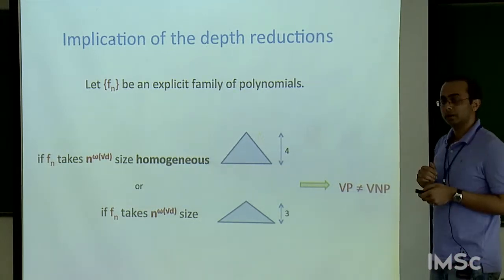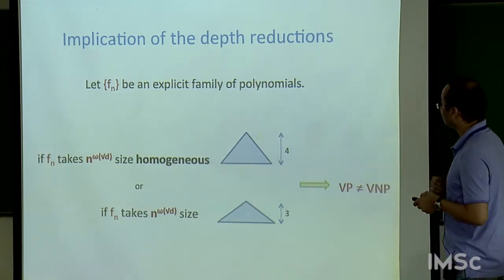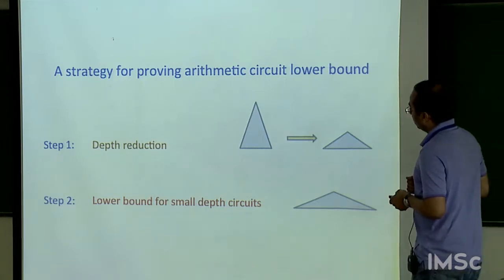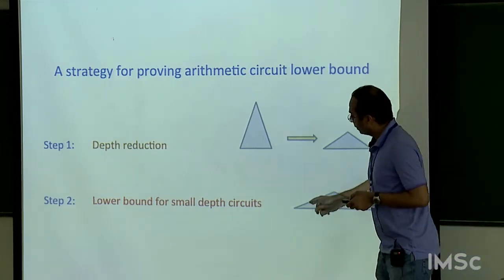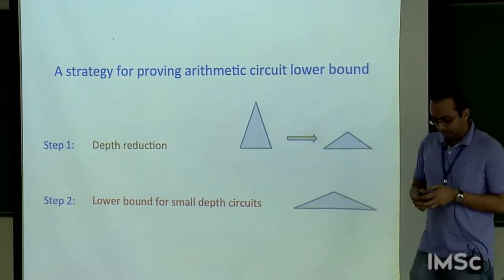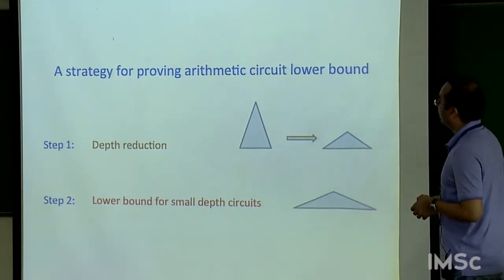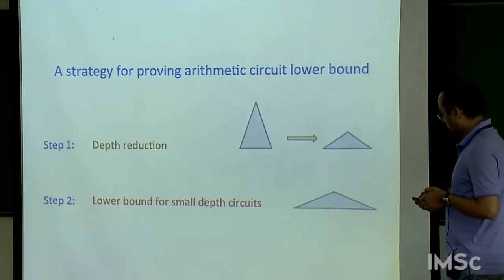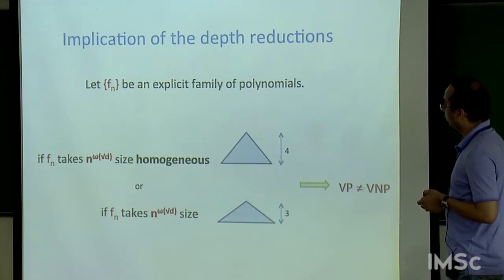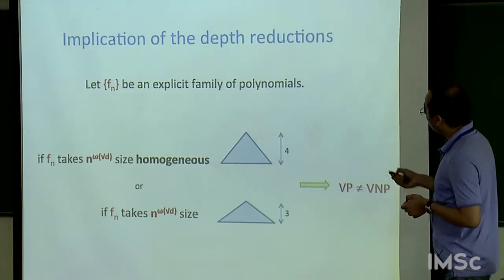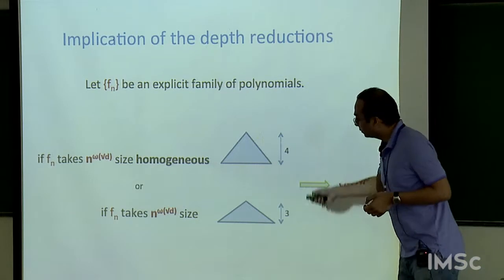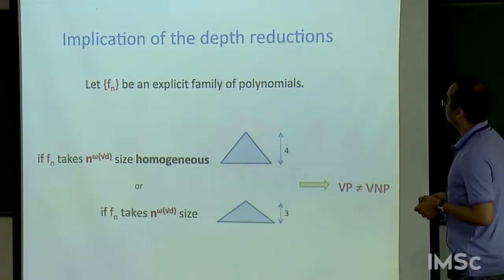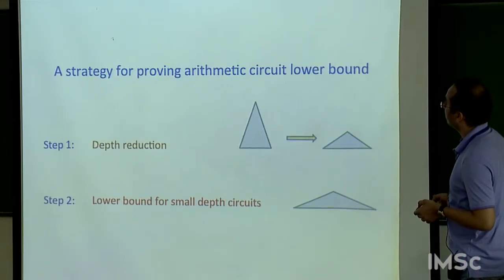The hope is that because these small depth circuits are so structured, perhaps one can exceed the N^(√D) barrier and end up separating VP from VNP. The talk focuses on sketching lower bounds for homogeneous depth 4 and general depth 3 circuits without homogeneity.